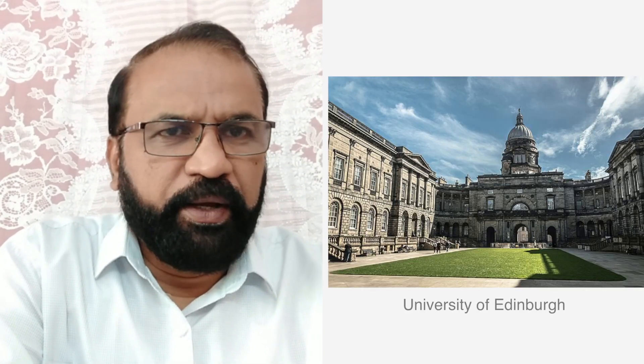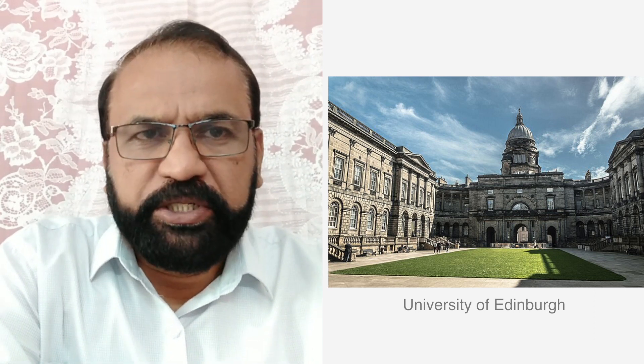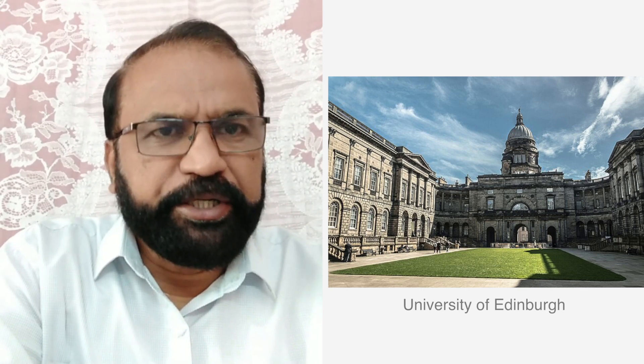Peter Higgs was born on 29th May 1929 to an English father and a Scottish mother. His father was a sound engineer with the BBC. Peter Higgs studied at King's College London and obtained his PhD in theoretical physics in 1954. Thereafter he joined the University of Edinburgh, at the Scottish capital city, and continued to do research and teaching there until he retired in 1996.